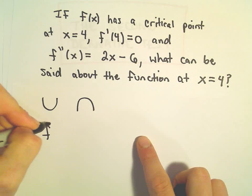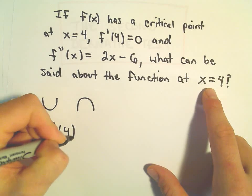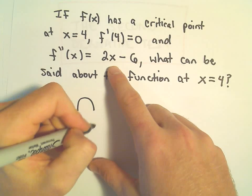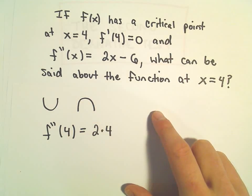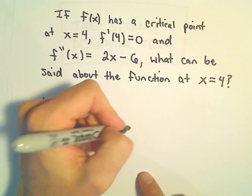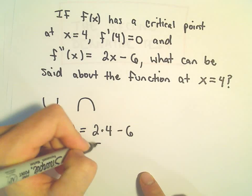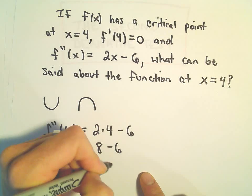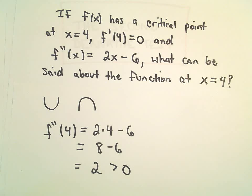So all we have to do is just plug in this point, x equals 4, into our second derivative. Well, in this case, we'll get 2 times 4 minus 6. That's just 8 minus 6 or positive 2, which is certainly greater than 0.